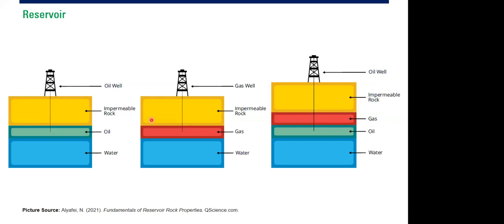Now we start talking about the reservoir — the first element of our system. A typical reservoir schematic: for an oil reservoir we have impermeable cap rock, the oil reservoir, and a water layer or aquifer. For a gas reservoir we have cap rock, gas reservoir, and aquifer. We can also have a gas cap above an oil reservoir, with aquifer below — this gas stored above the oil zone we call a gas cap.